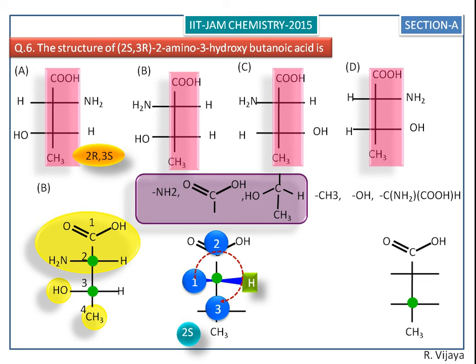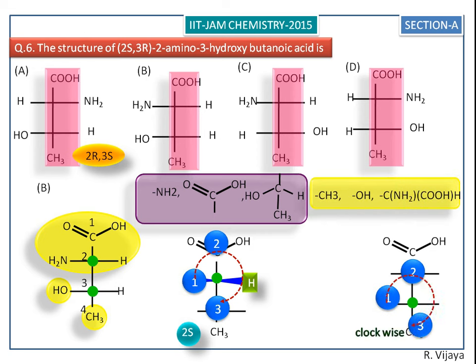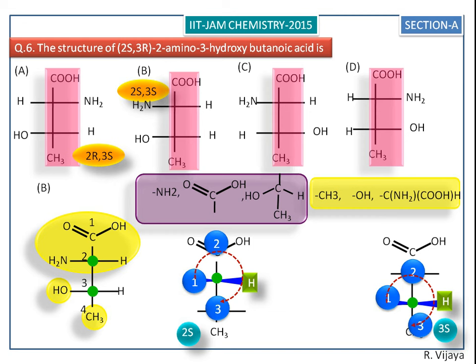Next we assign the configuration for the third chiral center. The higher priorities rotate in a clockwise direction, so it is supposed to be 3R, but it is not, because the least priority hydrogen is towards the observer, so we change R into S. The overall configuration for the B molecule is 2S and 3S, which also does not match the question.